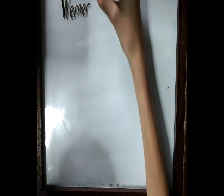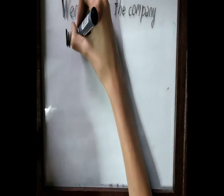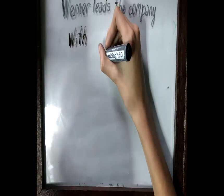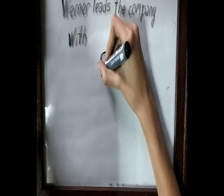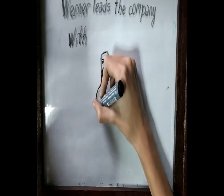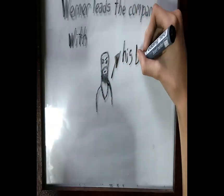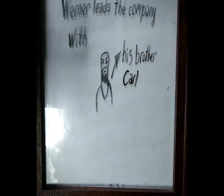Werner leads the Berlin company in close cooperation with his brother Karl. It is not until 1890, at age 73, that he hands over management of the company to his sons, Arnold and Wilhelm. But he retains control and continues to make decisions on far-reaching issues himself.